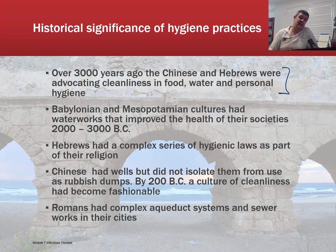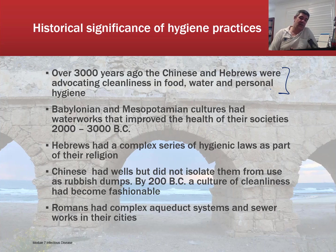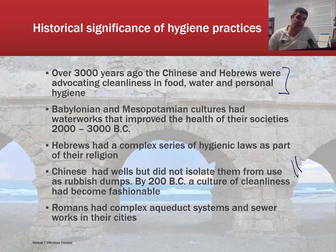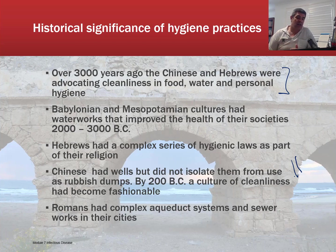The Hebrews had a complex series of hygienic laws as part of their religion, with rituals relating to cleanliness and washing that were part of Israelite culture. The Chinese had wells but did not isolate them from use as rubbish dumps. Even in our very modern society, there's still a lot of garbage that goes into stormwater drains and ends up in our oceans, rivers, and creeks. This has been happening virtually since human culture began, and so there have always been people who realised that's not a good idea.